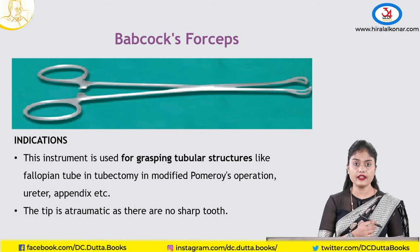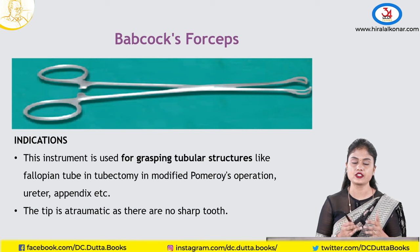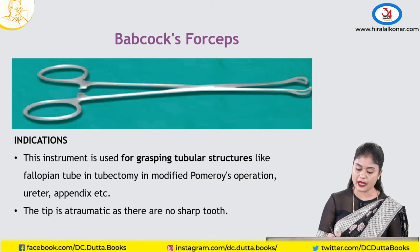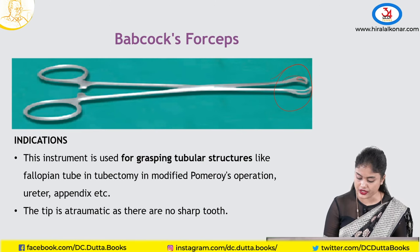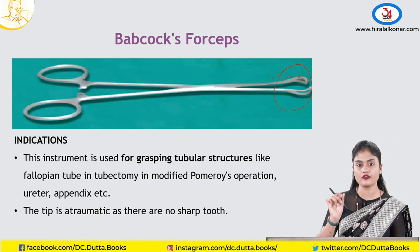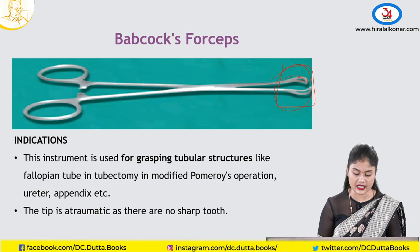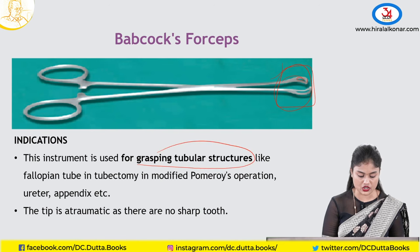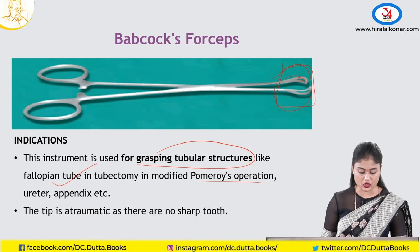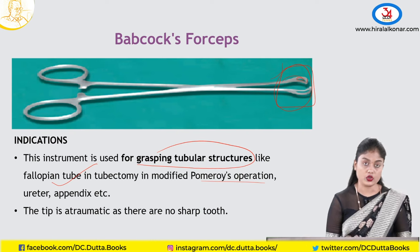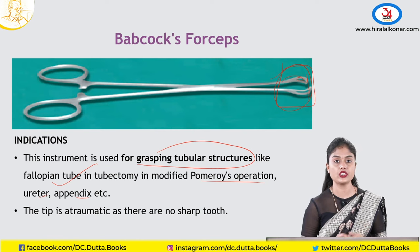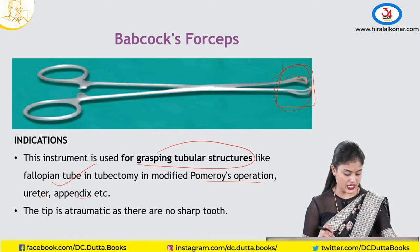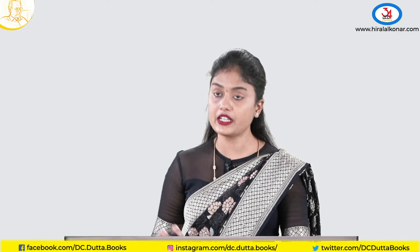Coming to Babcock's forceps. Unlike harsh instruments like valsellum, Alice, or Kocher's which have teeth, Babcock's has a bulge at the tip and serrations but no teeth — it is an atraumatic, soft tissue-holding instrument. We use it to grasp tubular structures like the fallopian tube in Pomeroy's method, or to hold the ureter, appendix, or intestine. The atraumatic tip does not injure soft and fragile tissues.